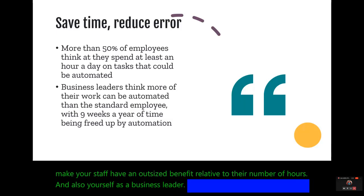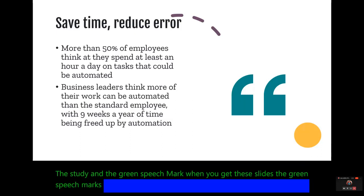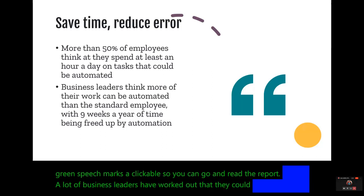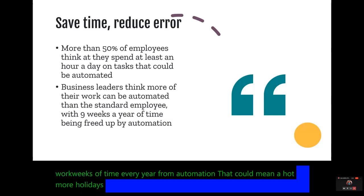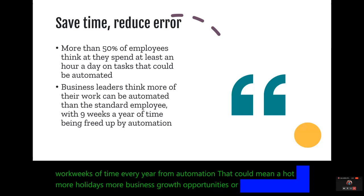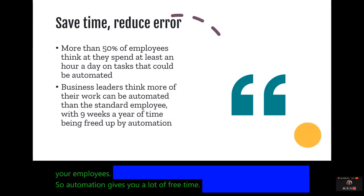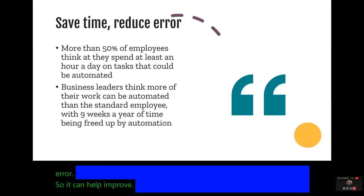A lot of business leaders have worked out that they could save nine work weeks of time every year from automation. That could mean more holidays, more business growth opportunities, or stronger cover for your employees. So automation gives you a lot of free time, and when it's doing the right thing correctly, it can really reduce error, improve quality, and cut out rework time as well.